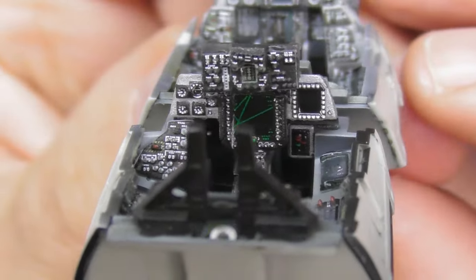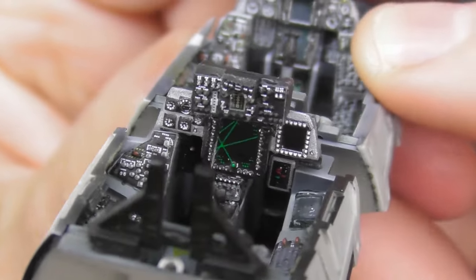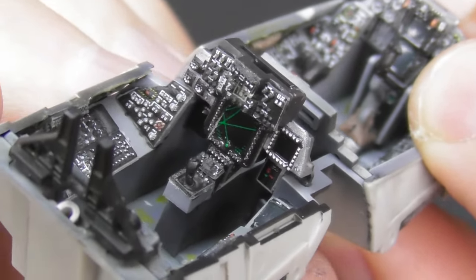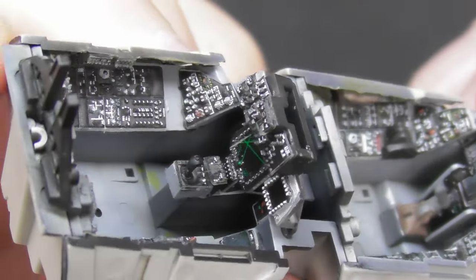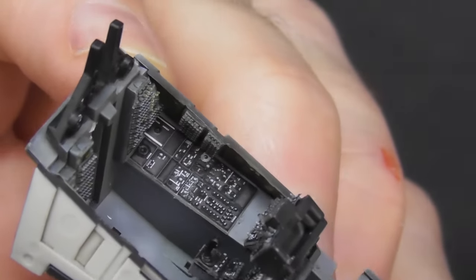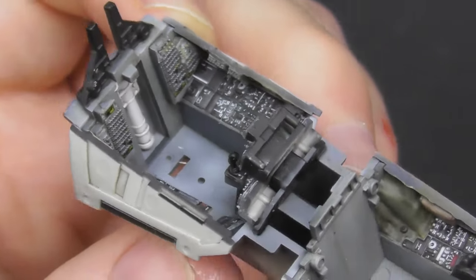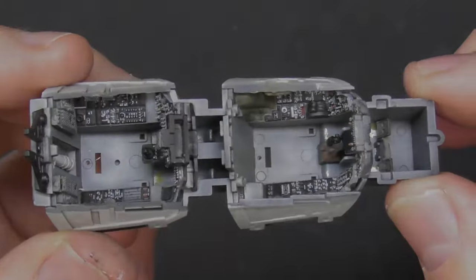So that is the finished cockpit. Thank you very much for watching. In the next episode, we'll be doing the airframe. A little bit complicated with the dropped flaps and slats and it's very modular. Thanks very much for watching. I'll see you in part 3. Cheers, bye-bye.